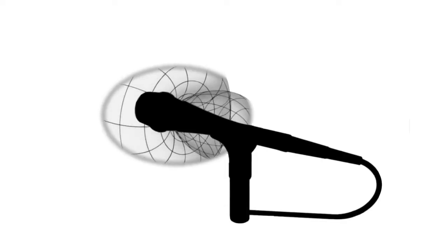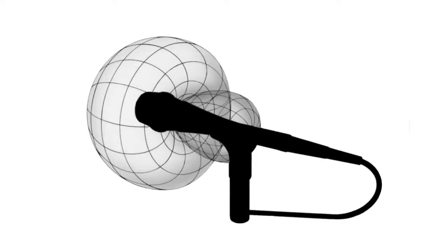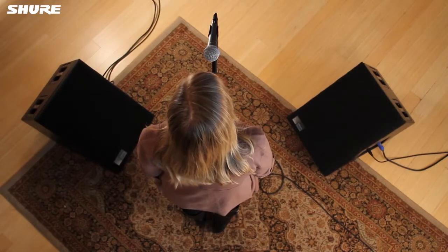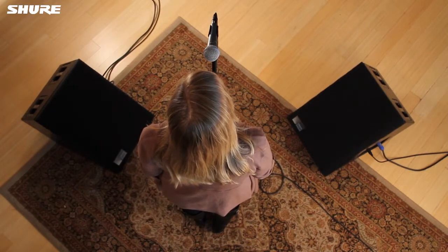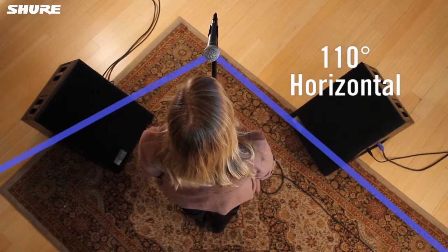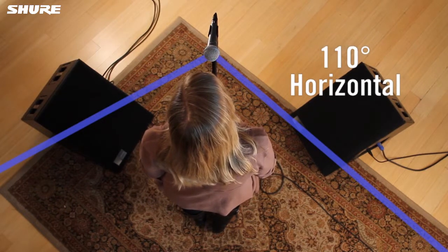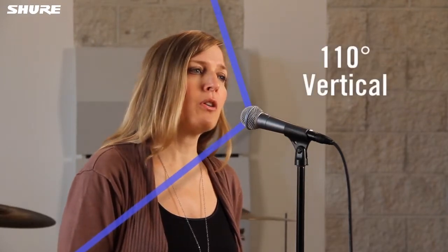A super cardioid microphone has a narrower pick up angle than the cardioid, but unlike the cardioid, it is slightly sensitive to sound sources that are directly behind the mic. A super cardioid mic provides better isolation from room noise and nearby instruments and can be more resistant to feedback than a cardioid, but it requires the user to maintain a more consistent position directly in front of the mic.